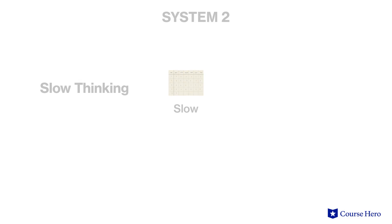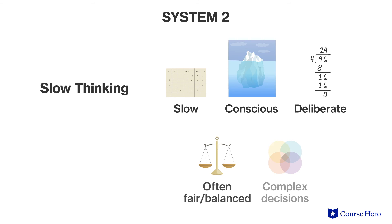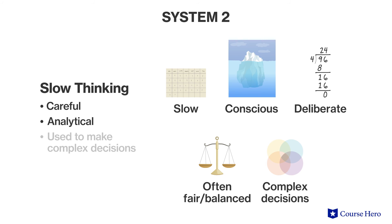We also employ slow thinking — system two thinking — or careful analytical reasoning to make complex decisions. While we would like to think that people rely mostly on system two, in practice, system one thinking often guides people or is more influential.